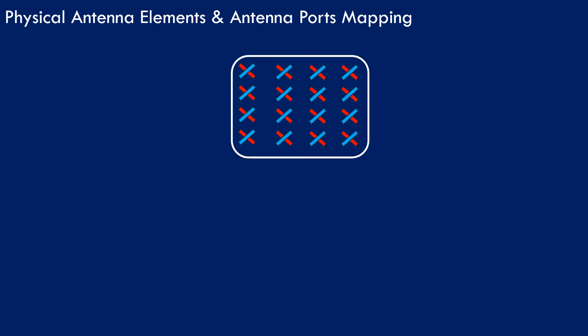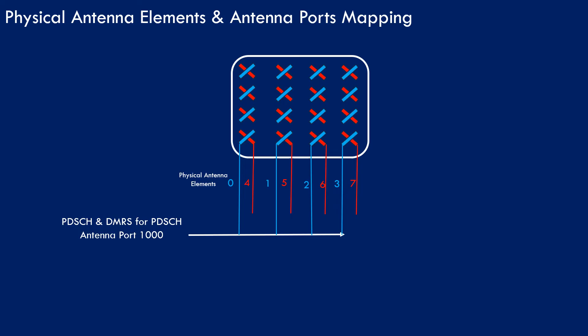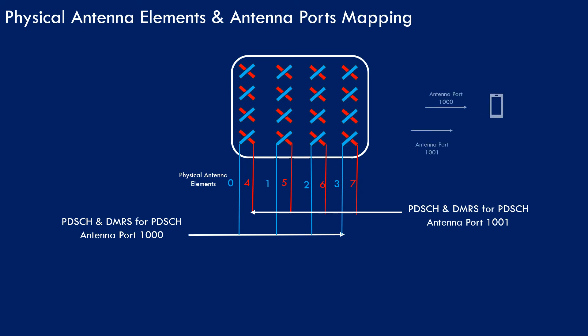In another example, one group of antenna elements is mapped to PDSCH and DMRS for PDSCH antenna port 1000, and another group is mapped to PDSCH and DMRS for antenna port 1001. The UE receives signals from two antenna ports. This provides beamforming but with less gain and directivity than the previous example because there are fewer physical antenna elements per antenna port.